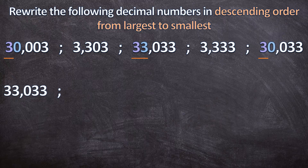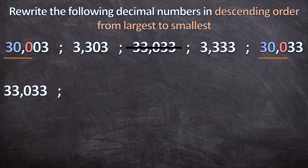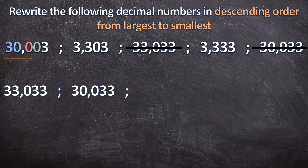Now we still have 30,003 and 30,033. In the tenths place they are both 0, so we move to the hundredths. Now we have a difference: 3 is bigger than 0, so our second largest number is 30,033. We cancel that one. Our third largest is 30,003, and we cancel that as well.